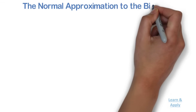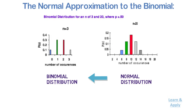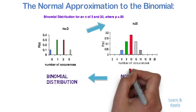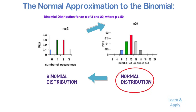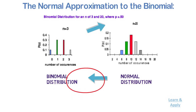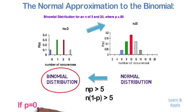The Normal Approximation to the Binomial: using the normal distribution, a continuous distribution, as a substitute for the binomial distribution — a discrete distribution — for large values of n seems reasonable because as n increases, a binomial distribution gets closer and closer to a normal distribution. The normal probability distribution is generally deemed a good approximation to the binomial when np and n(1−p) are both greater than 5. That is, when p = 0.5, n should be greater than or equal to 10.